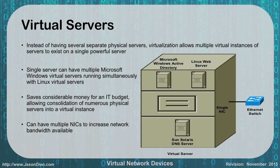In this picture, we have one physical server piece of hardware, but we're running three different servers on it: a Sun Solaris DNS server, a Linux web server, and a Microsoft Active Directory server, all in one piece of hardware. This single server is allowing us to do three things at once. Some servers can actually have hundreds of things at once depending on hardware requirements.